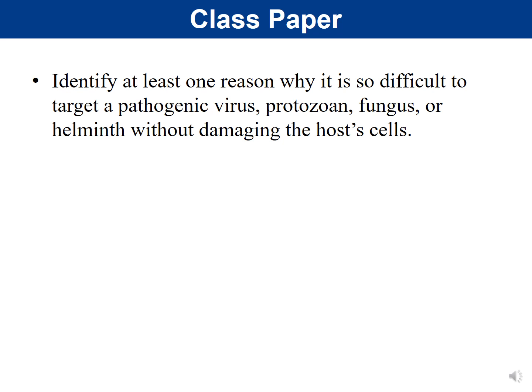Here is a class paper we will discuss together — you don't need to post this on Canvas. The question asks: identify at least one reason why it's difficult to target a pathogenic virus, a protozoan, a fungus, or a helminth without damaging the host cell. Think about why each is more difficult to target. Pause the video, think it through, then push play to hear the answer.